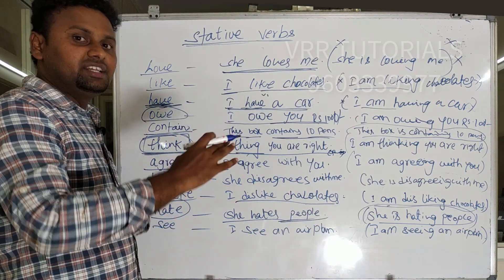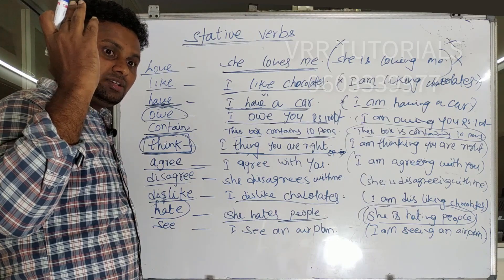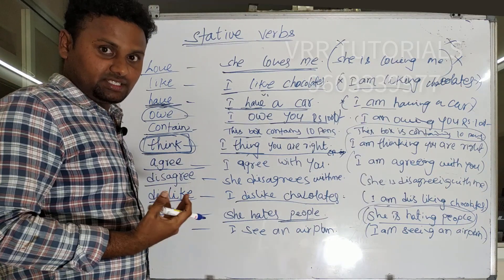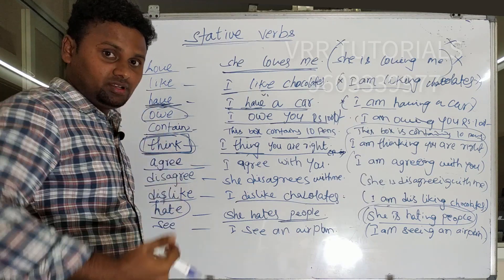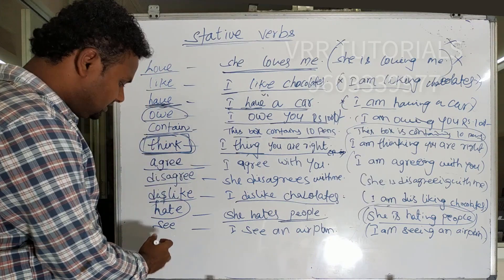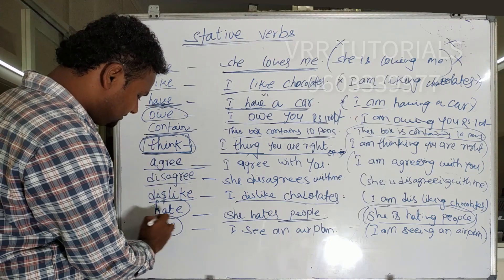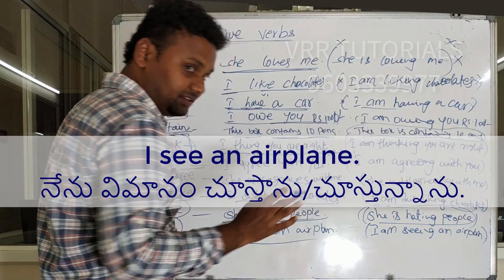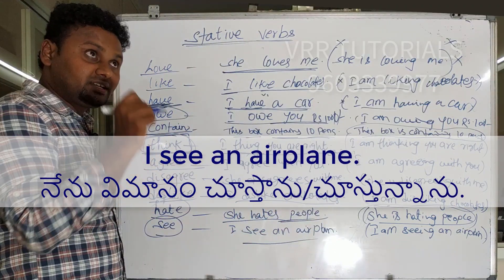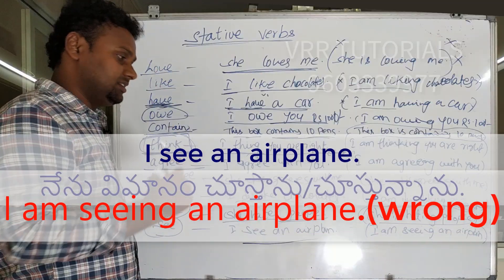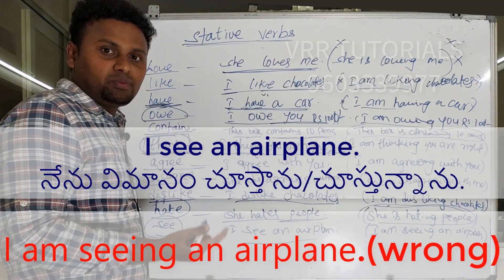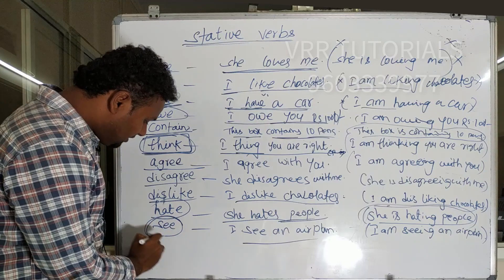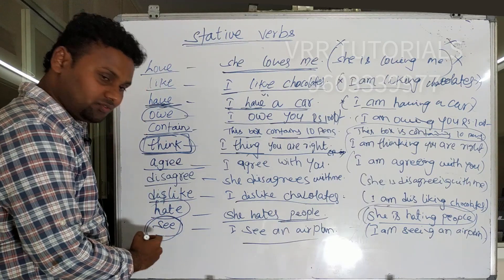If you want to say 'hate' in the past: she hated people those days. Next: 'see.' I see an airplane — that is correct. Saying 'I am seeing an airplane' is incorrect in stative form. See is used in stative form here.